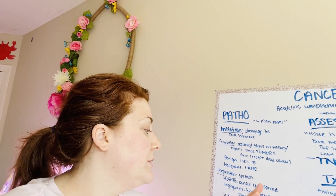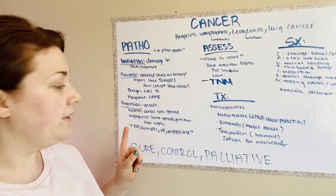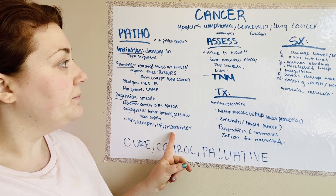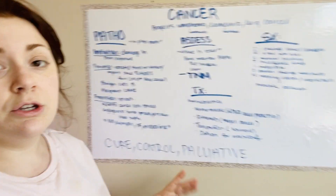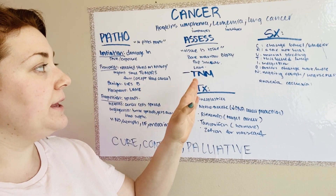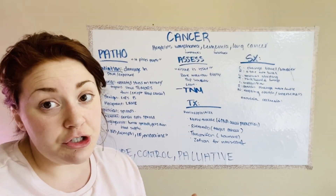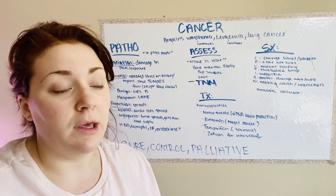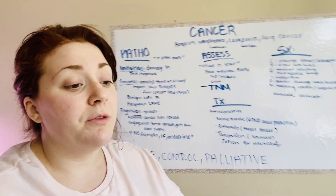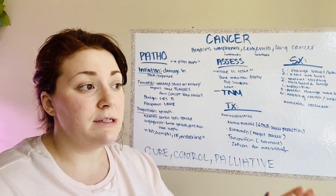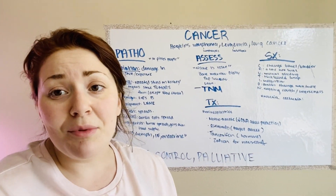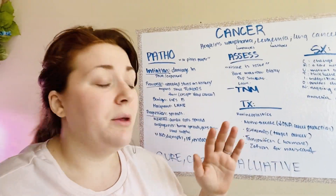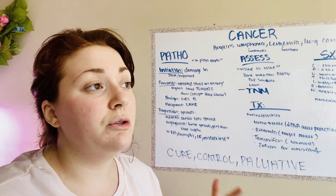Cancer spreads through the nervous system, the lymph, the interstitial fluid, and the endocrine. When assessing a patient, tissue is the issue, so you want to get a sample of their tissues by doing a bone marrow biopsy or a pap smear — there are many tests depending on the type of cancer. You can also do labs: a CBC with white blood cell count, a PSA for prostate. If they do find a tumor, they use the TNM grading system.